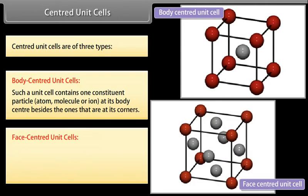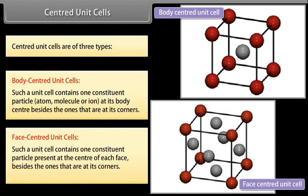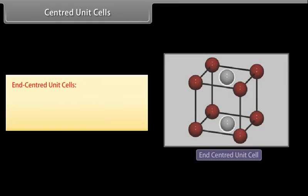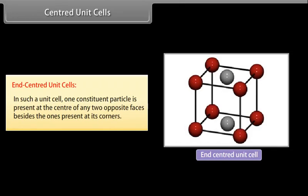Face Centered Unit Cell: Such a unit cell contains one constituent particle present at the center of each face besides the ones that are at its corners. End Centered Unit Cell: In such a unit cell, one constituent particle is present at the center of any two opposite faces besides the ones present at its corners.